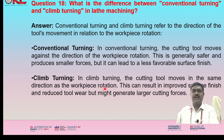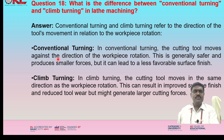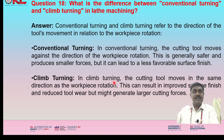What is the difference between conventional turning and climb turning in lathe machining? Conventional turning and climb turning refer to the direction of the tool's movement relative to workpiece rotation. Conventional turning: the cutting tool moves against the direction of workpiece rotation — generally safer and produces smaller forces, but can lead to a less favorable surface finish. Climb turning: the cutting tool moves in the same direction as the workpiece rotation — this can result in improved surface finish and reduced tool wear, but might generate larger cutting forces.